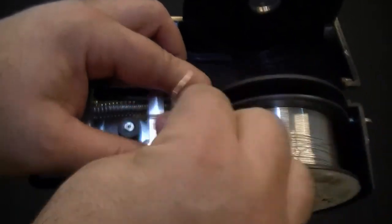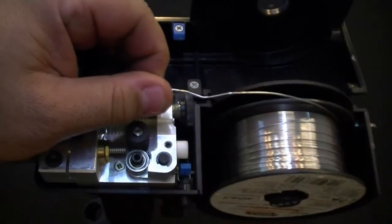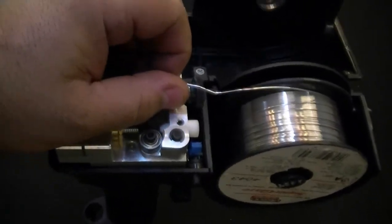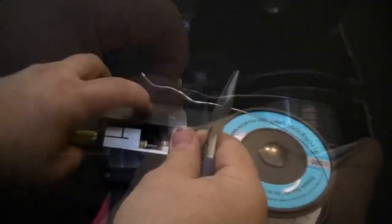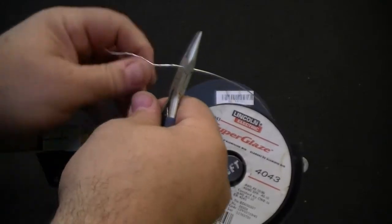Pull the wire out from the hole in the side of the spool. Be careful not to allow the spool to spin freely. Straighten the wire then clip off the bent or deformed end of the wire.